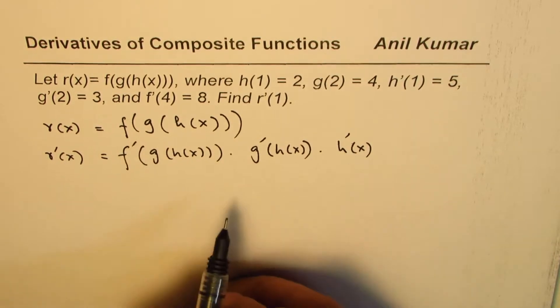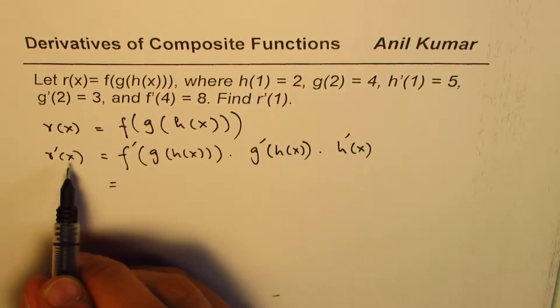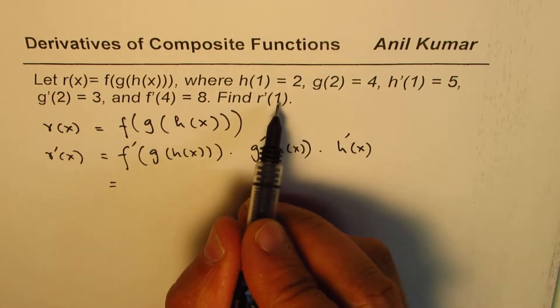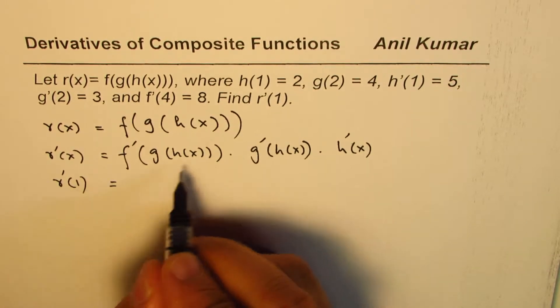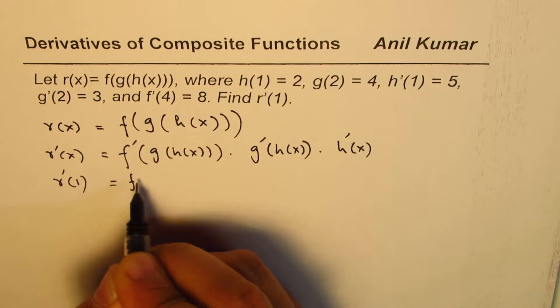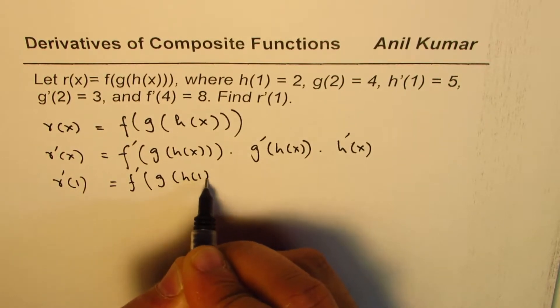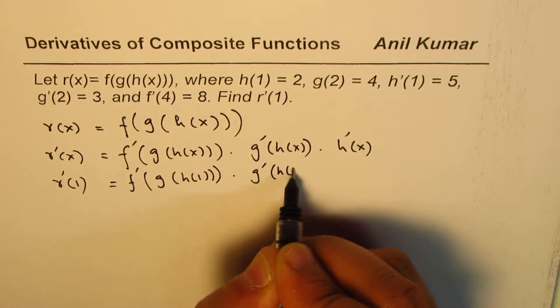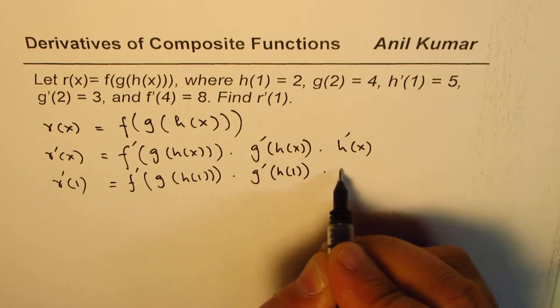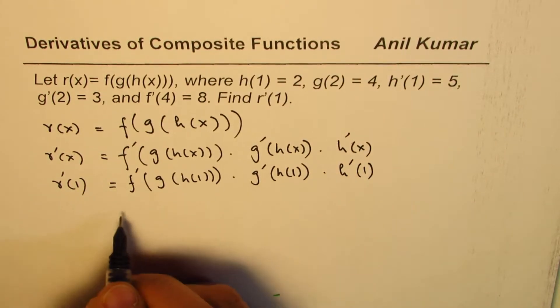Now what do we need to find? We need to find this derivative at x = 1. So we can write this as 1 here, replacing x with 1. So we get f'(g(h(1))) times g'(h(1)) times h'(1). That's what we need.